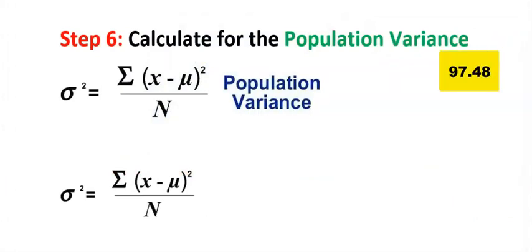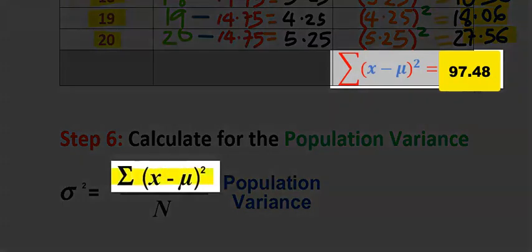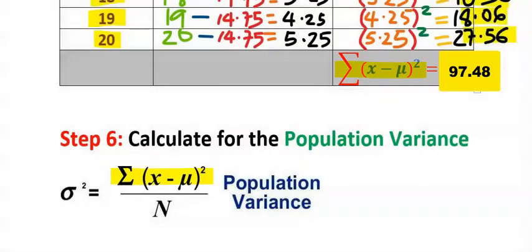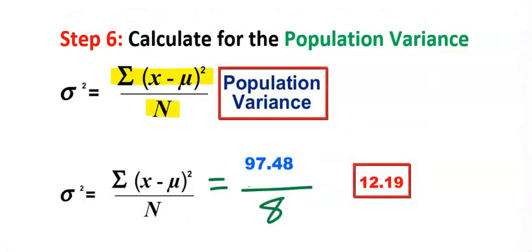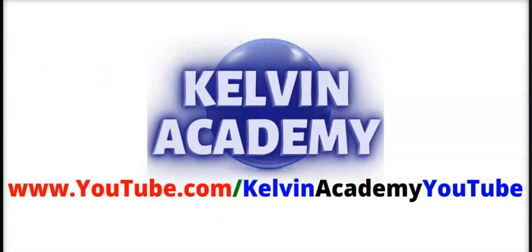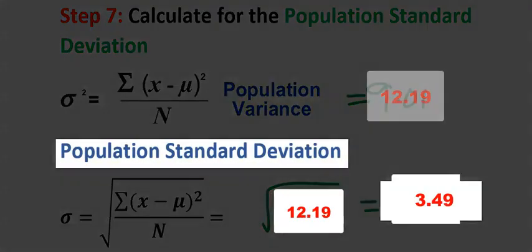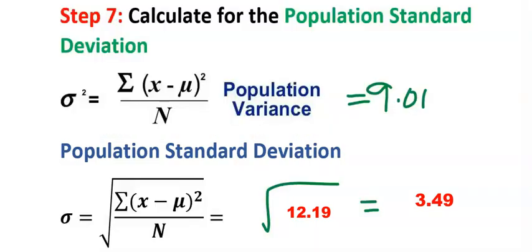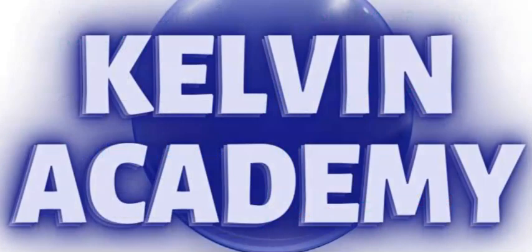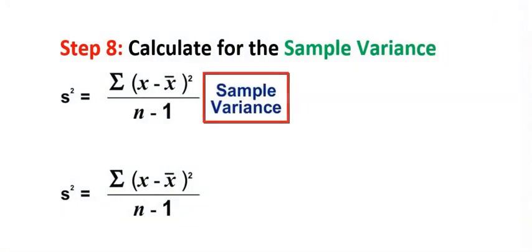In step six, calculate the population variance. Everything has already been calculated, and n is 8, so we divide by 8. Then calculate the population standard deviation — the standard deviation becomes the square root of the variance, giving an answer of 3.02 to two decimal places.